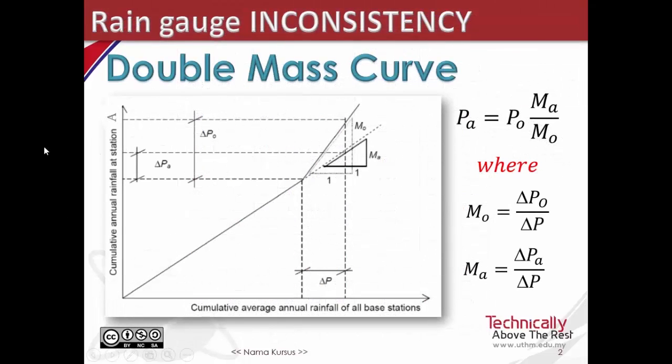Plot graph accumulated annual precipitation station A versus accumulated precipitation of base stations. And compute the slope MO and MA. MO is the original slope while MA is the adjusted slope.